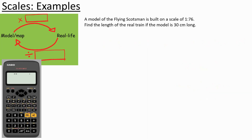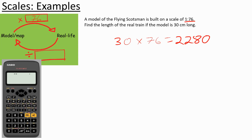You'll also see scales used with scale models rather than maps. A model of the Flying Scotsman is built on a scale of 1 to 76. Find the length of the real train if the model is 30 centimetres long. To go from the model to real life we multiply by 76, so 30 times 76 gives 2,280 centimetres. Dividing by 100 gives 22.8 metres.